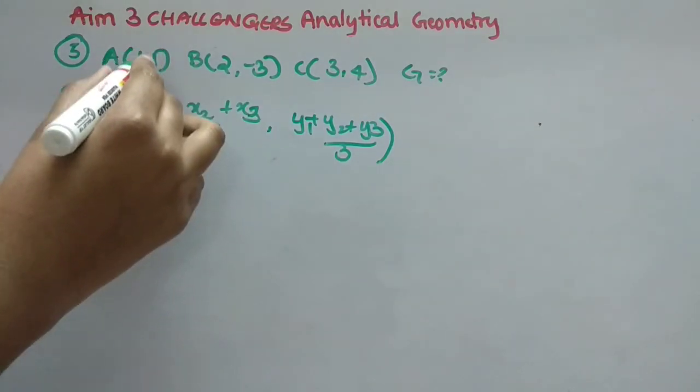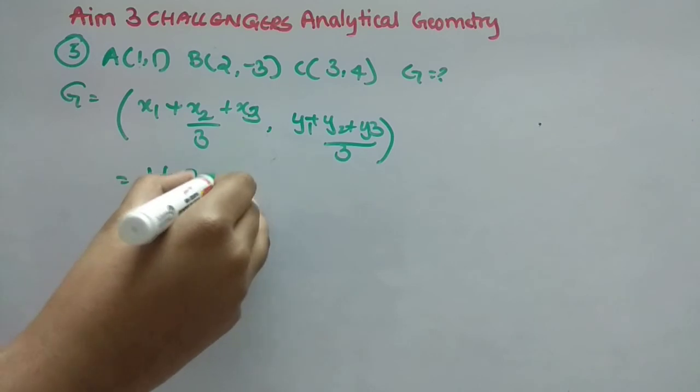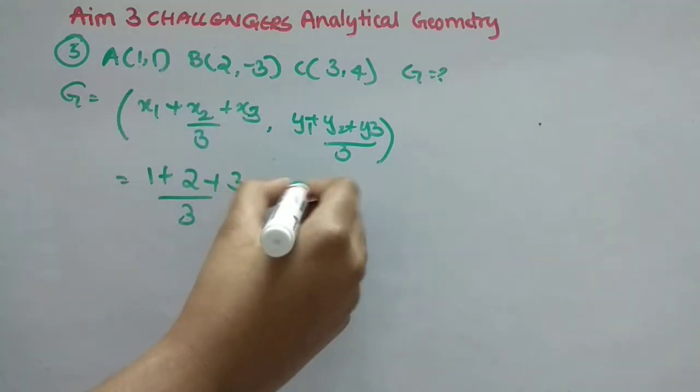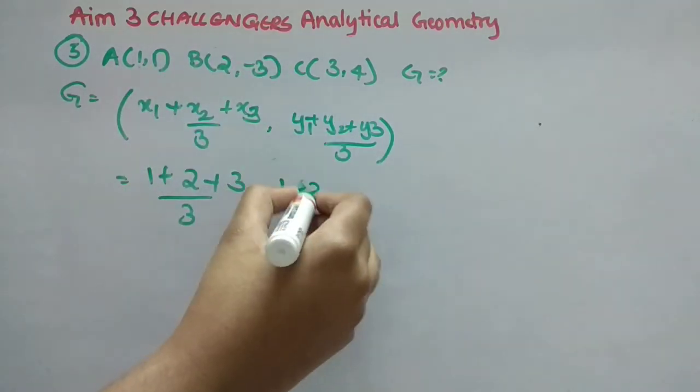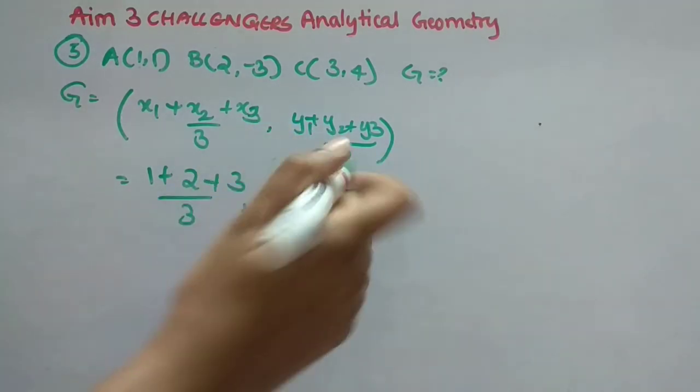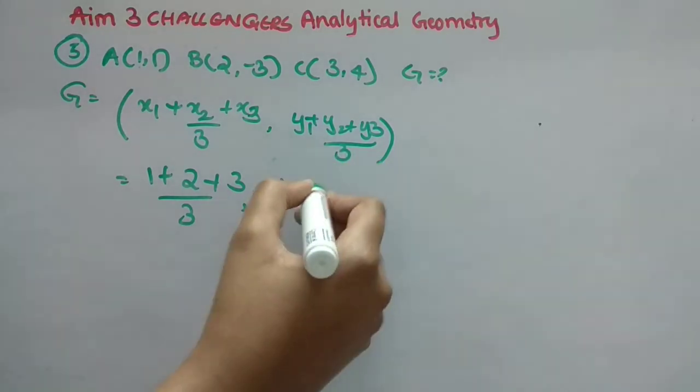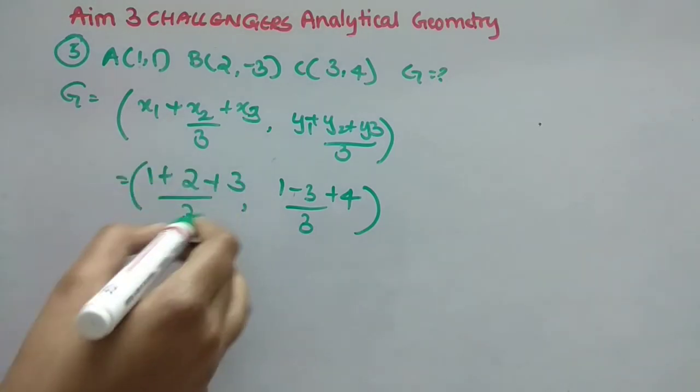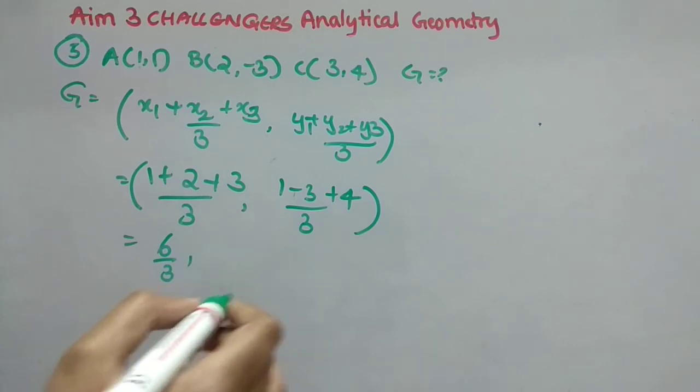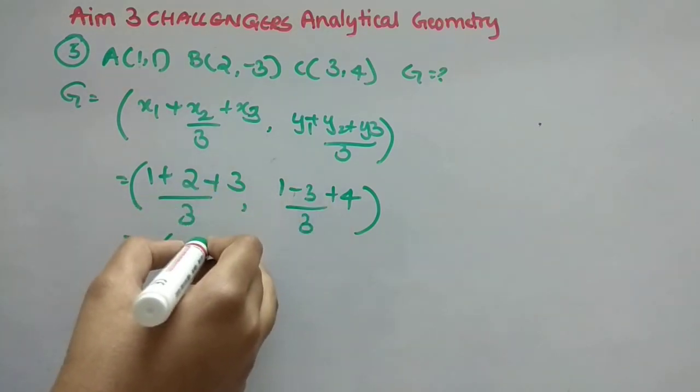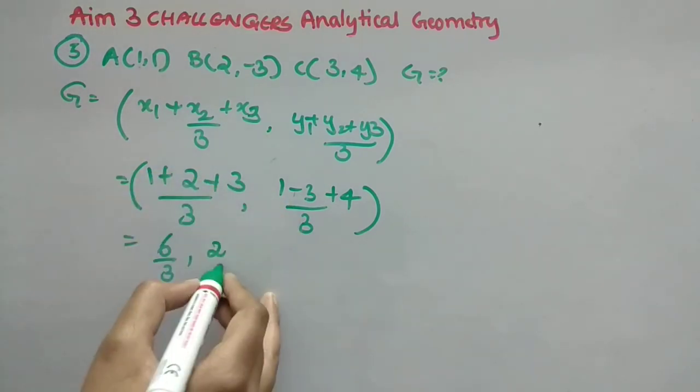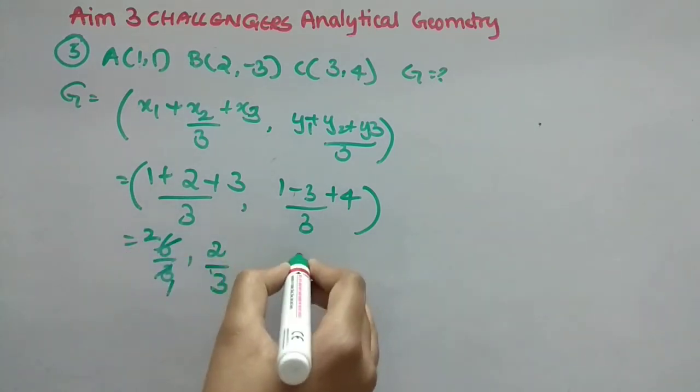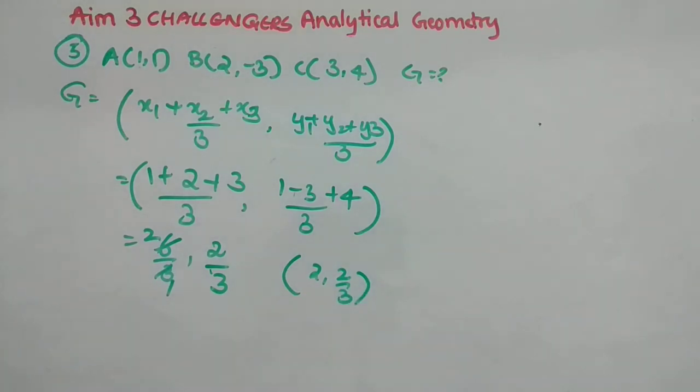Put the value. x1 is 1, all the substitution only. x2 is 2, x3 is 3 by 3, comma, y1 is 1, y2 is minus 3. So I will just put it minus 3. Plus y3 is 4 by 3. Now 1 plus 2 is 3. 3 plus 3 is 6. 6 by 3, comma, 1 minus 3 is minus 2. Minus 2 plus 4 is 2. So 2 by 3. Now our 3 ones are 3 twos are. So the answer is 2 comma 2 by 3. So this is the answer.